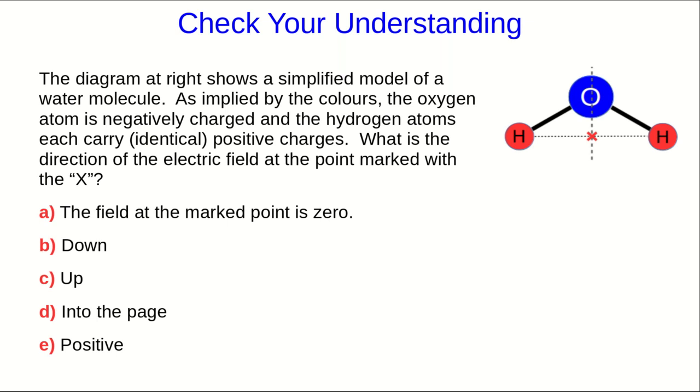So here is a diagram that shows a simplified model of a water molecule. And I've been using blue for negative and red for positive for some time. So the diagram is telling you that the hydrogen atoms are positive and the oxygen atom is negative. And so I want you to come up with the direction of the electric field at the point that's marked with the X.